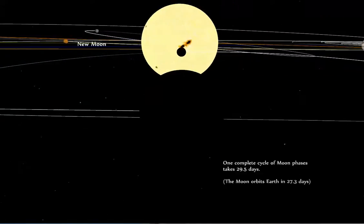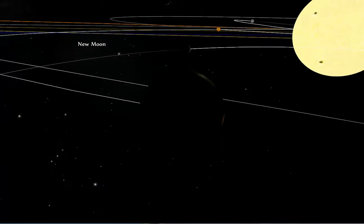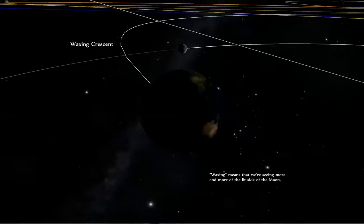The sequence that follows shows the moon completing a full cycle from new moon to full moon and back as it completes an orbit around the Earth over the course of almost one month. You start at new moon. You go to a waxing crescent moon. Waxing means that we're seeing more and more of the lit side of the moon.